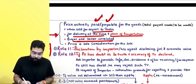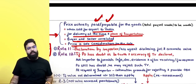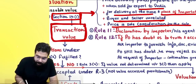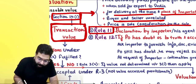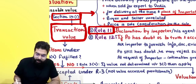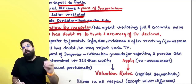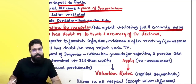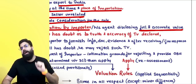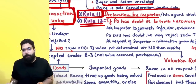Price must be the sole consideration for transaction value to be accepted. Step one: file a declaration under Rule 11. Rule 11 says you should file a declaration by the importer or his agent about the full and accurate disclosure of value. When you file your bill of entry, you must also give a declaration about the full and accurate value at which you have imported the goods.